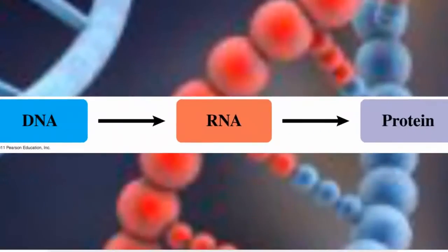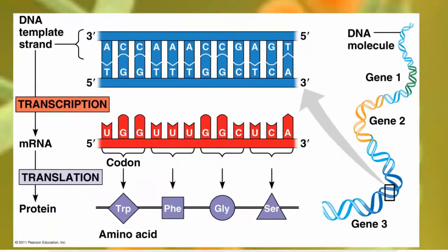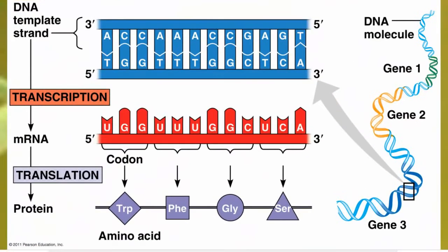So what is the central dogma of biology? Central dogma means that it is the fundamental principle of molecular biology. This principle is the idea that information is passed from DNA to RNA to protein. Now there's a little bit more to it than that simple figure — let's look at it a little bit more in depth.